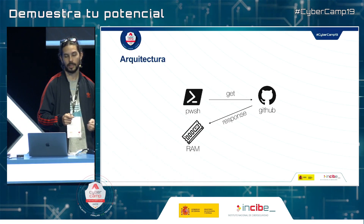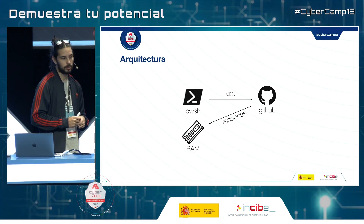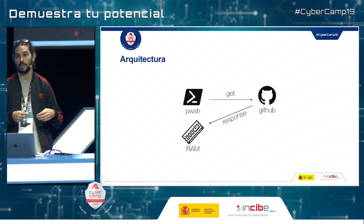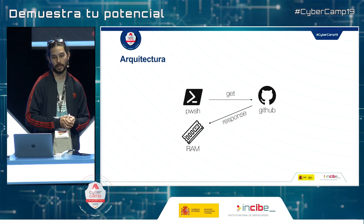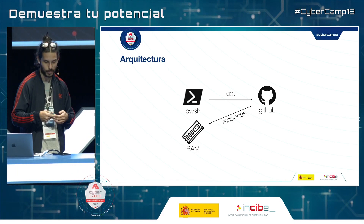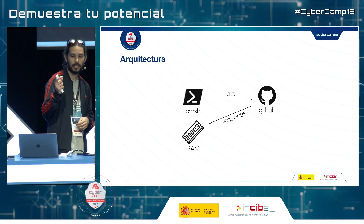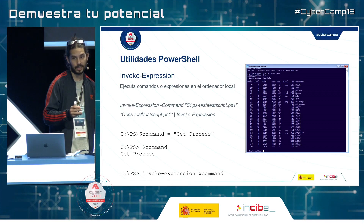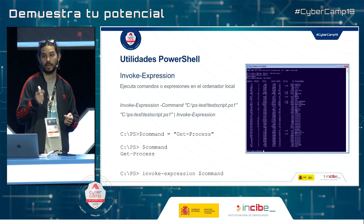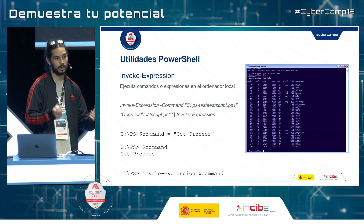Regarding architecture: everything that we are loading is going to be downloaded from GitHub. This is great because we will always have an updated prompt — if we develop a new functionality and upload it to the repository, when we load iBombshell into memory, we'll have all the new functionalities. From PowerShell, we connect to GitHub and the responses are injected. Whenever we close PowerShell, this script disappears and every time we need it, we download it from the internet.